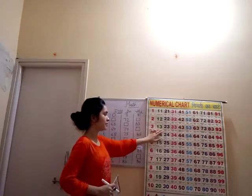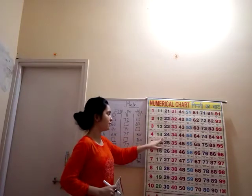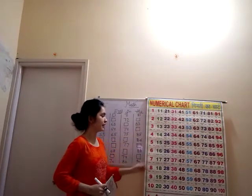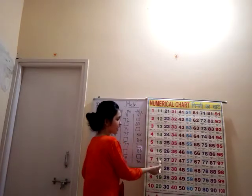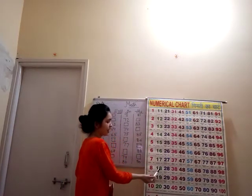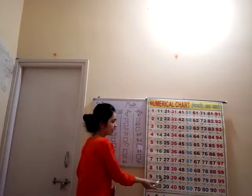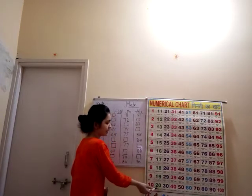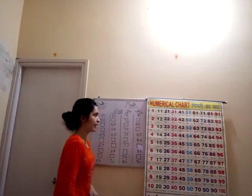1, 3, 13. 1, 4, 14. 1, 5, 15. 1, 6, 16. 1, 7, 17. 1, 8, 18. 1, 9, 19. 19 ke bad kya atar? 2, 0, 20.